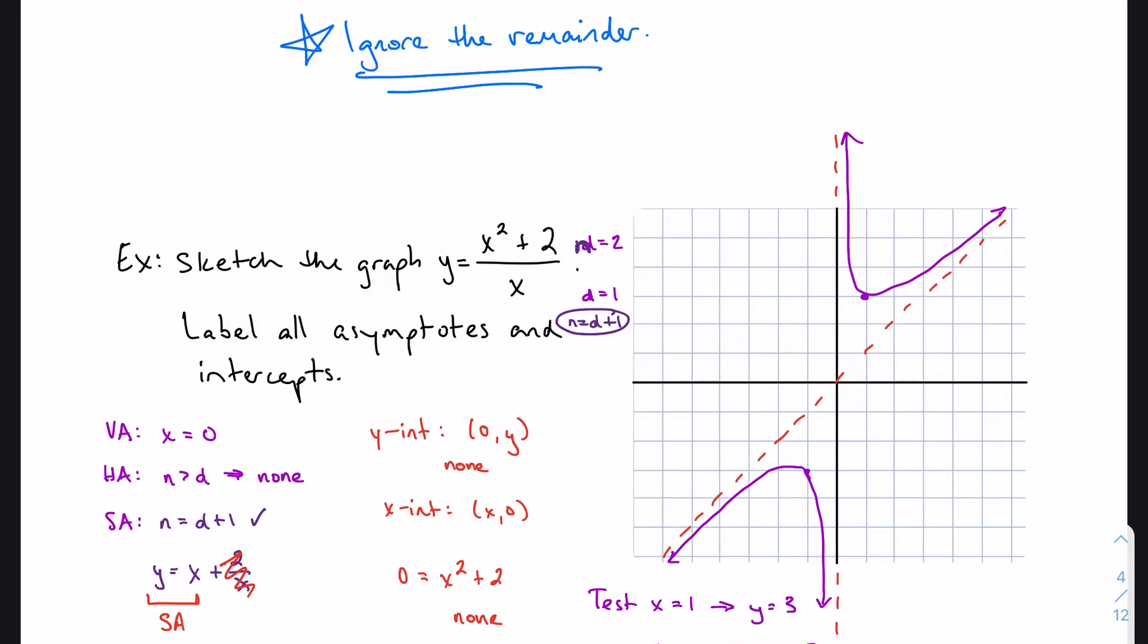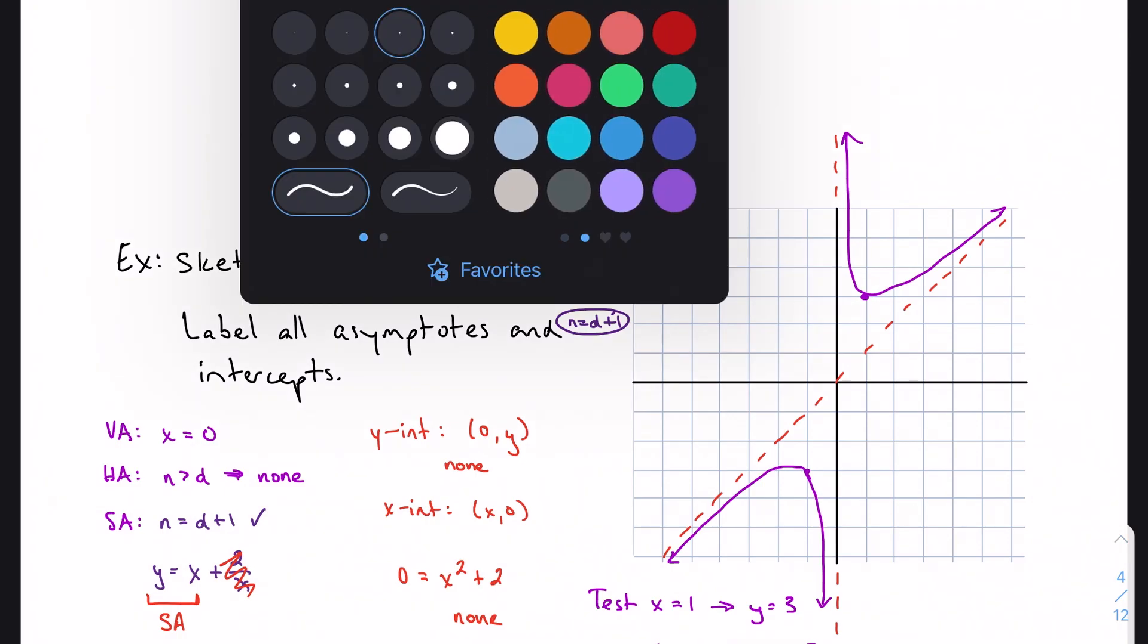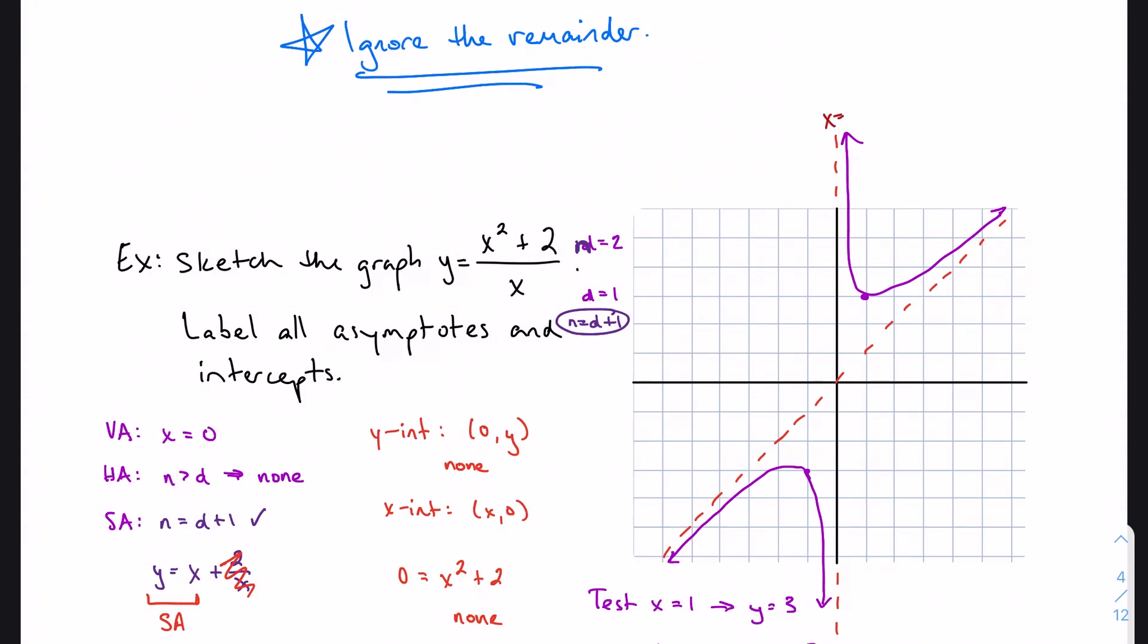And the one thing I haven't done yet is just label everything. So let me do that really quick. We've got x equals 0, we've got y equals x, I've got the point (1, 3), and I've got the point (-1, -3). I want to make sure everything is labeled properly.